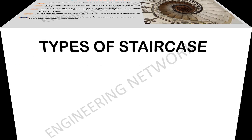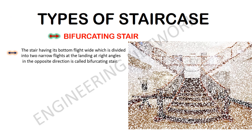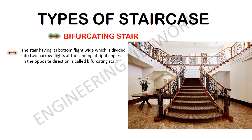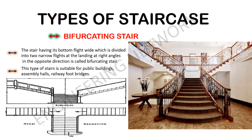The last commonly used type is the bifurcating stair. The stair having its bottom flight wide, which is divided into two narrow flights at the landing at right angles in opposite directions, is called a bifurcating stair. This type is suitable for public buildings, assembly halls, and railway foot bridges.